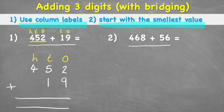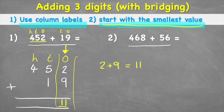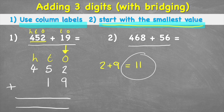Now I can put my equals sign and plus sign. The second tip says start with the smallest value, which is the ones column. I'm going to start by adding my ones: two add nine equals 11. I don't want to put 11 here because this column is only supposed to have one digit. Looking at 11, I have a one in the ones column and a one in the tens column, so I can put the one from the ones column down in the answer.